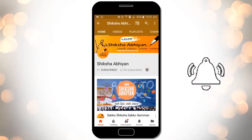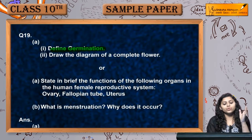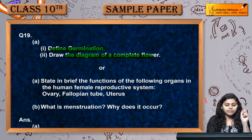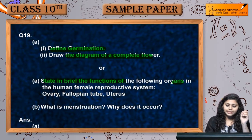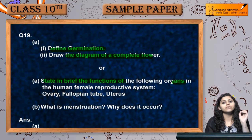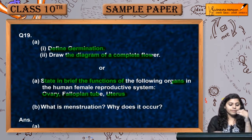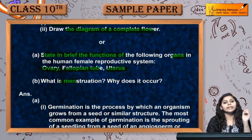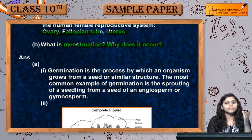Question number 19: define germination and draw the diagram of a complete flower. If you don't want to attempt this, you can attempt the second question instead: state in brief the functions of the following organs in the human female reproductive system — ovary, fallopian tube, and uterus — and also: what is menstruation and why does it occur?